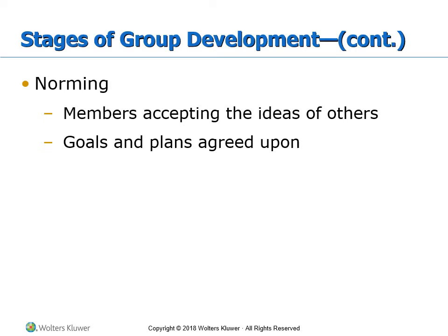Then comes norming — perhaps around the third or fourth class. After the conflicts of the storming stage, members are now accepting of others' ideas, goals and plans are agreed upon, and the group is being productive. You're getting projects done, studying together, coming up with group decisions. It's less about the facilitator controlling the group and more about the group itself working together.